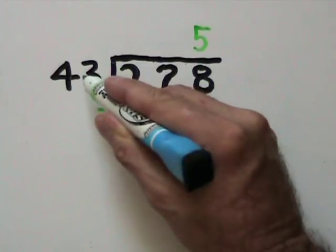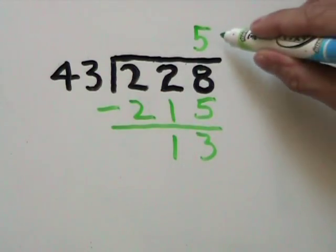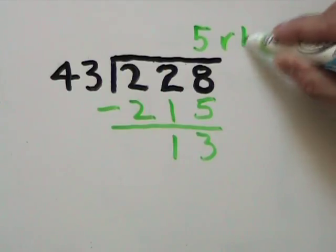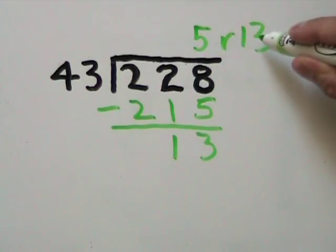Since 13 is smaller than our divisor of 43, 13 will be our remainder. And we have a final answer of 5 remainder 13.